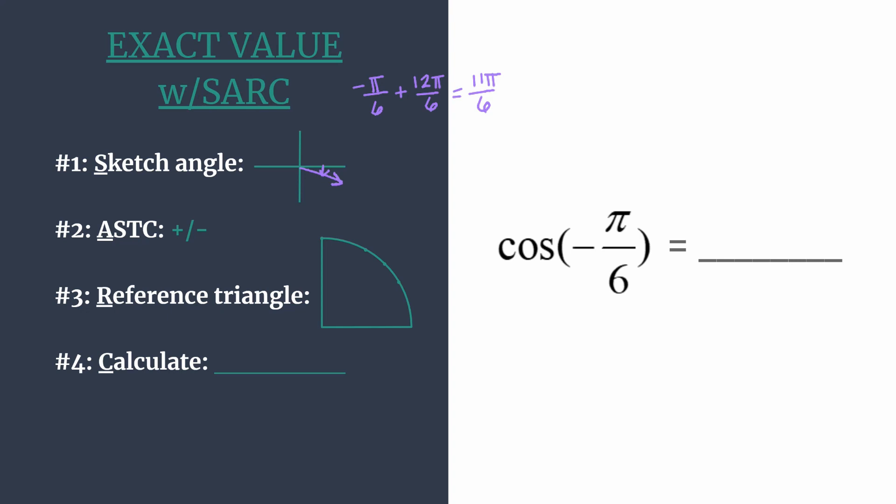So back to our sketch, we have our terminal side of our angle sketched, and we are ready to decide if our value for cosine should be positive or negative.